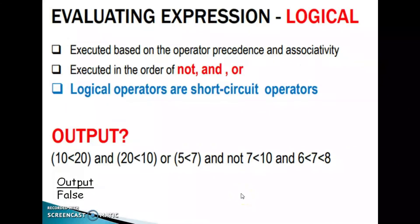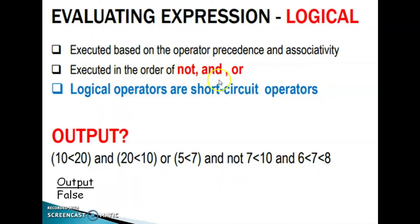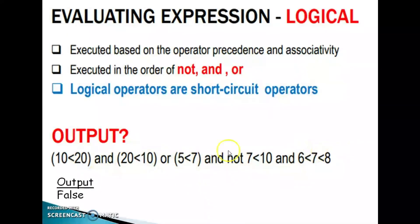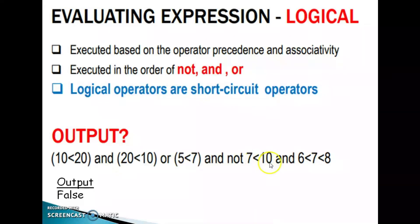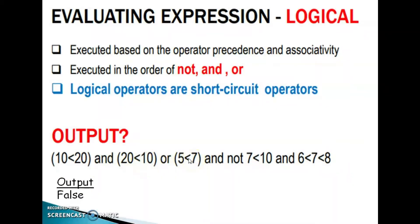Evaluating logical expressions: they are executed based on operator precedence and associativity, in the order of not, and, or. Logical operators are short circuit operators. Exercise: what will be the output of 10 less than 20 and 20 less than 10 or 5 less than 7 and not 7 less than 10 and 6 less than 7 less than 8? Take a piece of paper and write down the expressions.